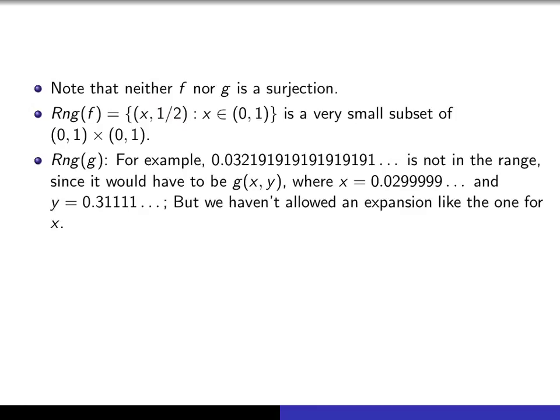But g isn't a surjection either, because, for example, if I take this one here, so I could write down anything which has the property that after a while, every second digit is a 9. Because if I do that, say for this one,